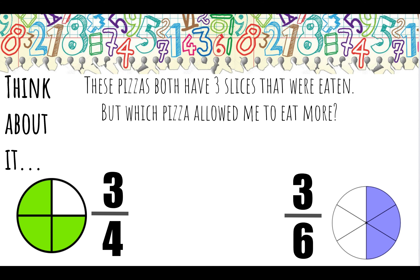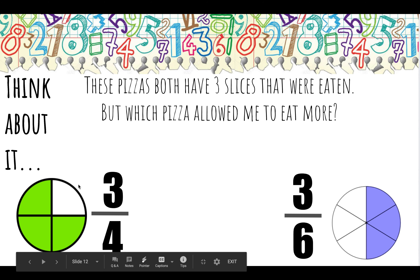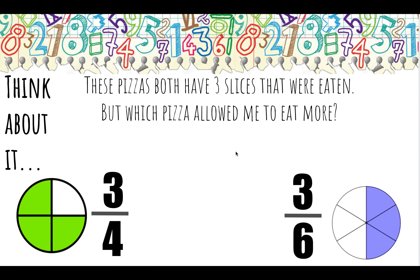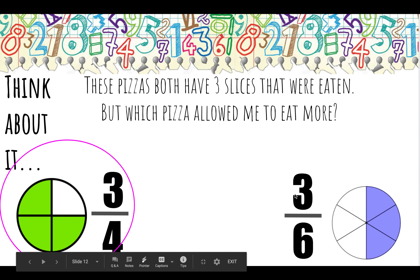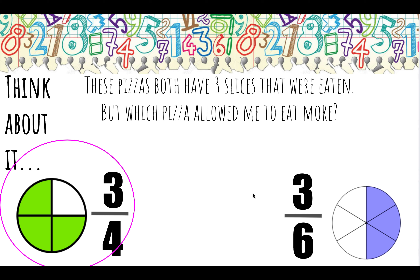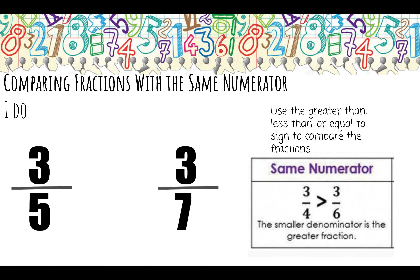Let's think about it with food once again. These pizzas both have three slices that were eaten, but which pizza allowed me to eat more? On the left I have three-fourths — four pieces of pizza, and I ate three. On the right, I have six pieces of pizza, and I ate three. Even though my denominator is smaller, three-fourths is actually the larger fraction. Three-fourths is almost one whole — four-fourths would be my one whole — while three-sixths is just about half of a pizza. If fractions have the same numerator and different denominators, the fraction with the smaller denominator is actually larger.